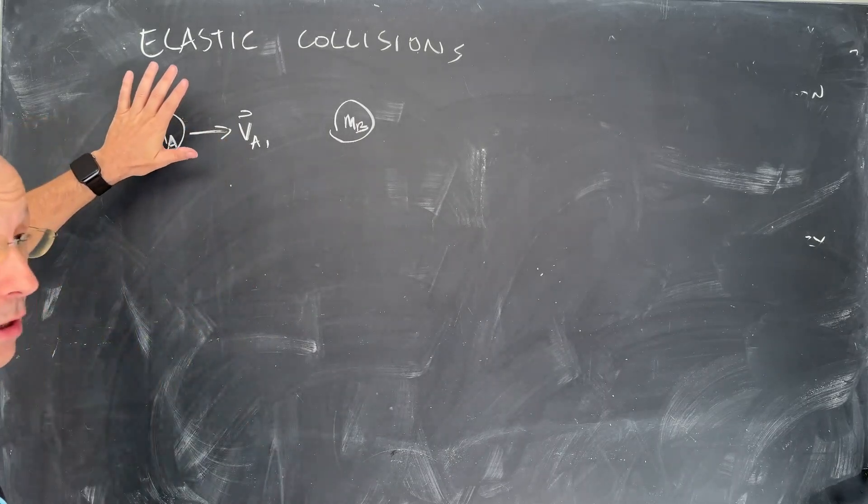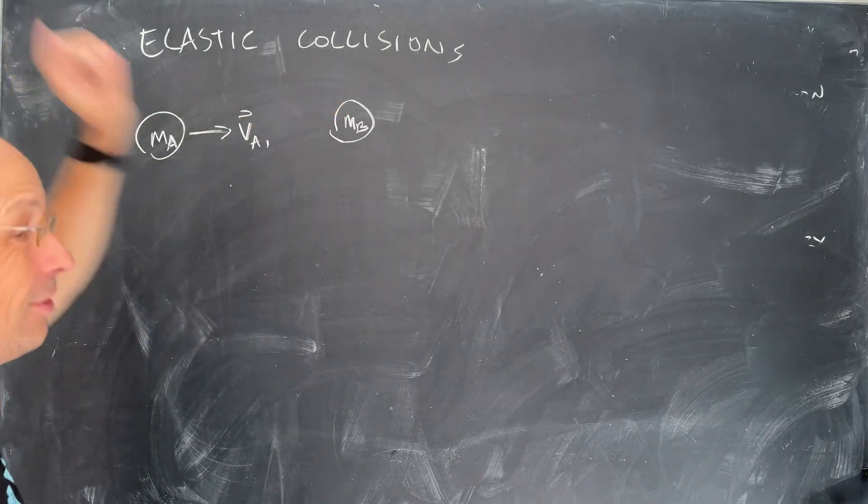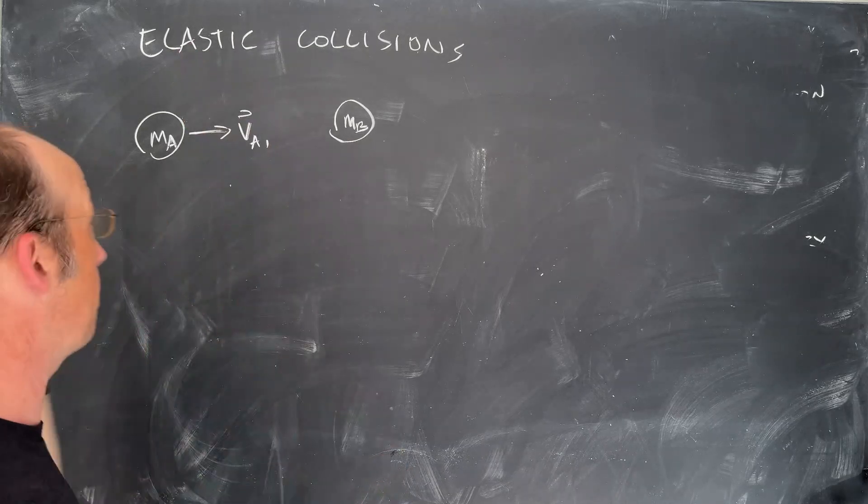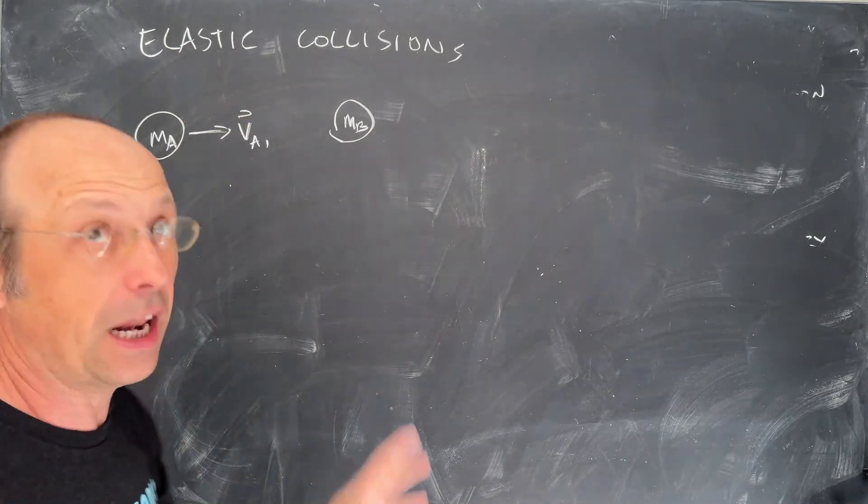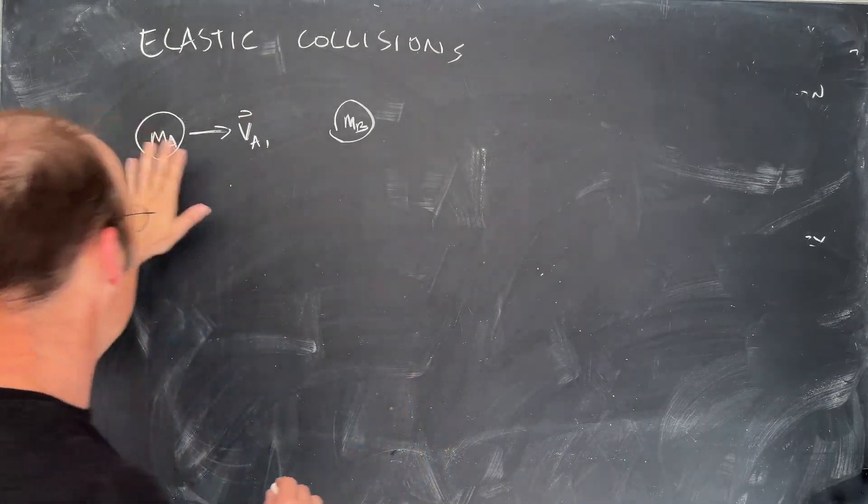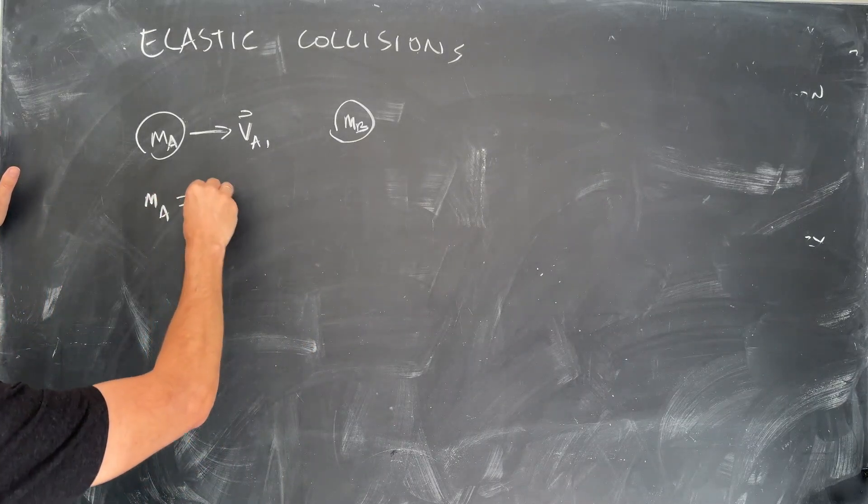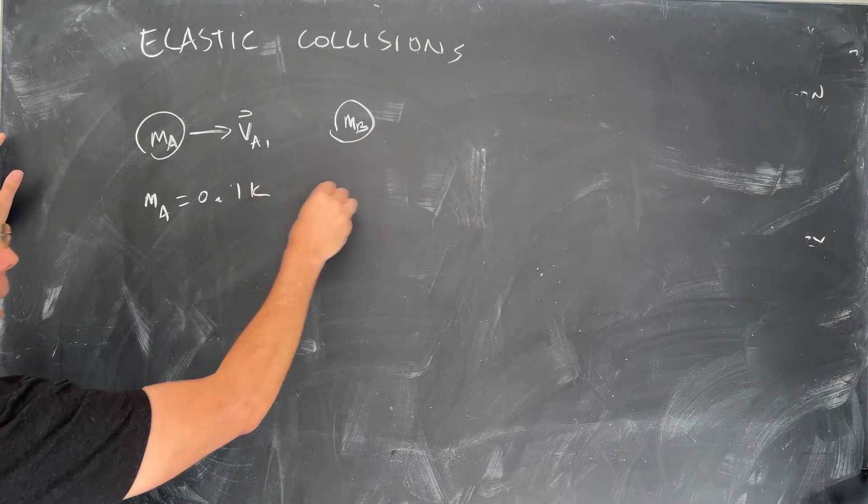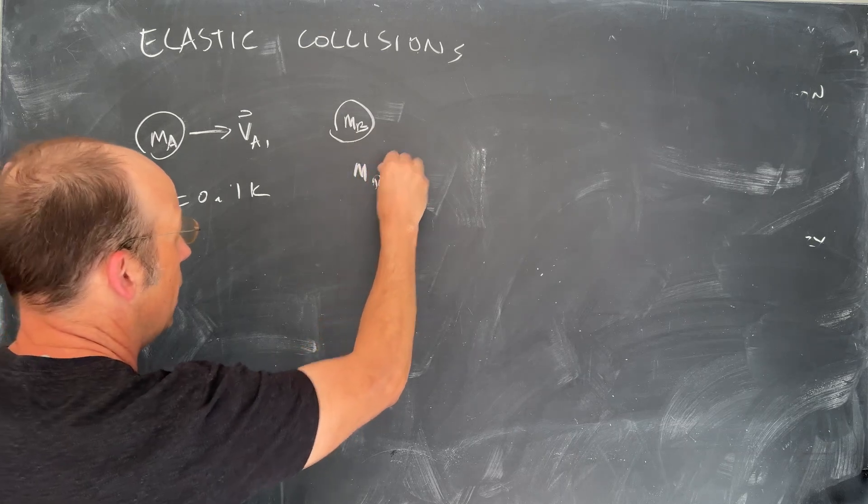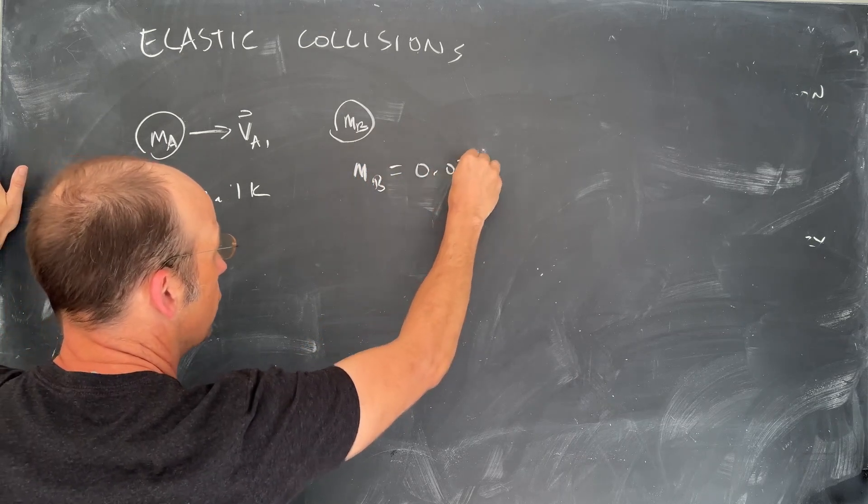So here I have an object right here. It's going to move towards that. I'm going to actually make these things. They're both going to have a radius. I'm going to have them the same size. Mass A, mass B. I'm going to pick some values. Let's say mass A is 0.1 kilograms. Mass B, just to be different, is 0.07 kilograms.